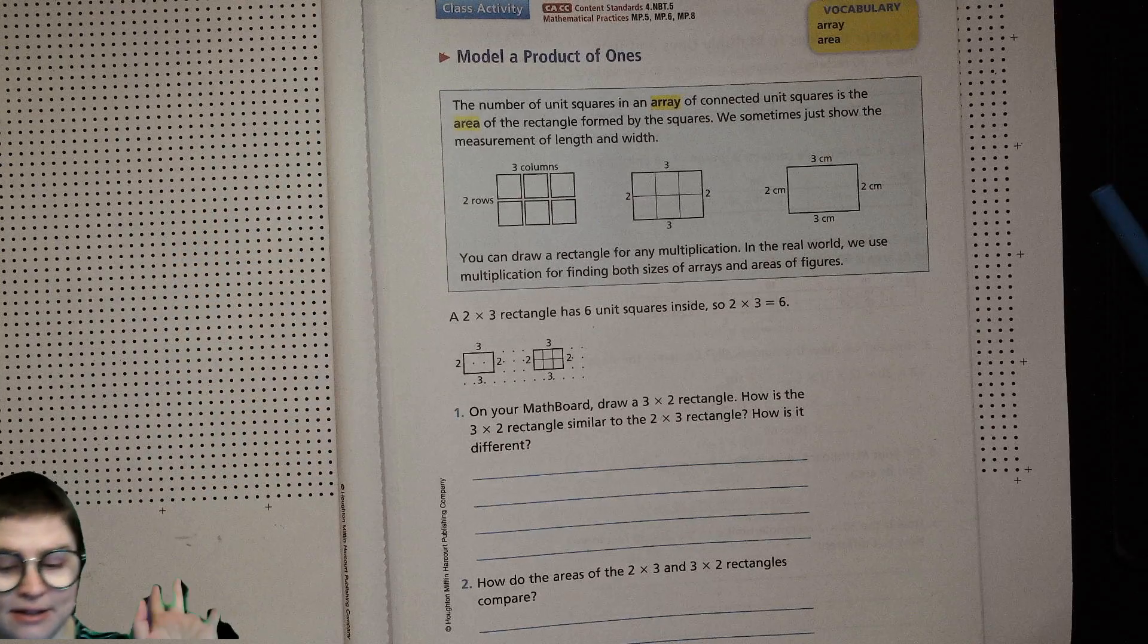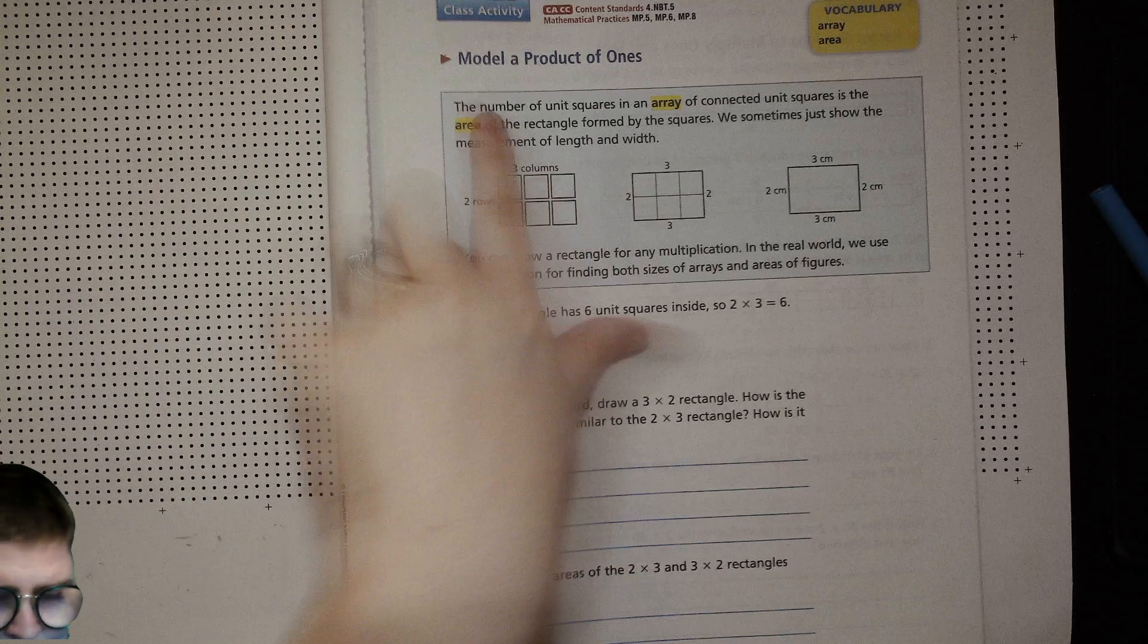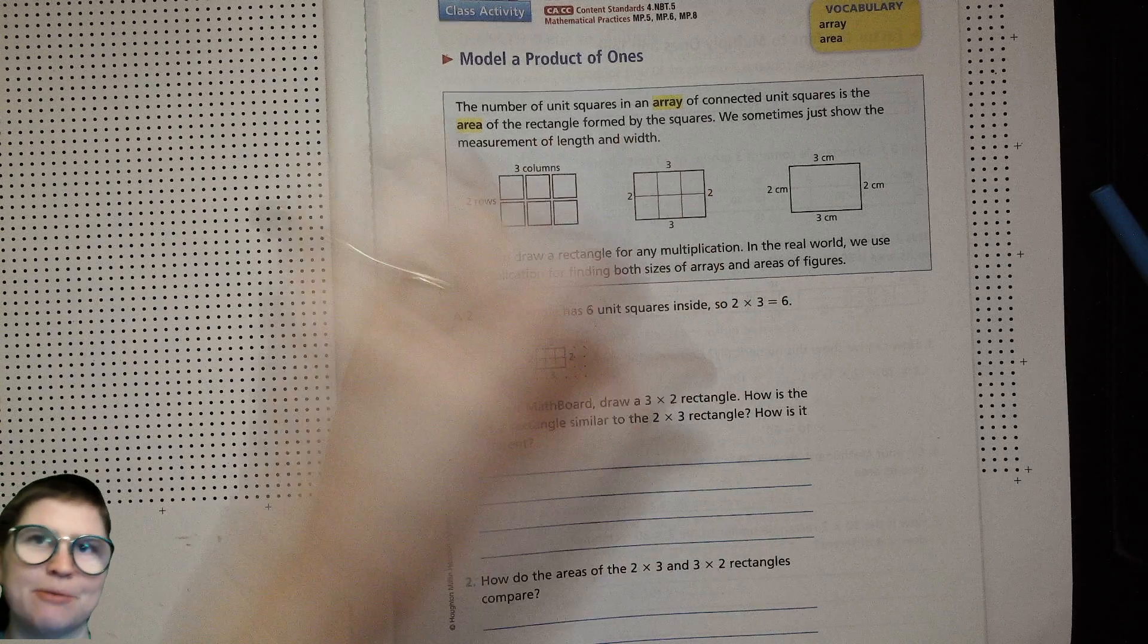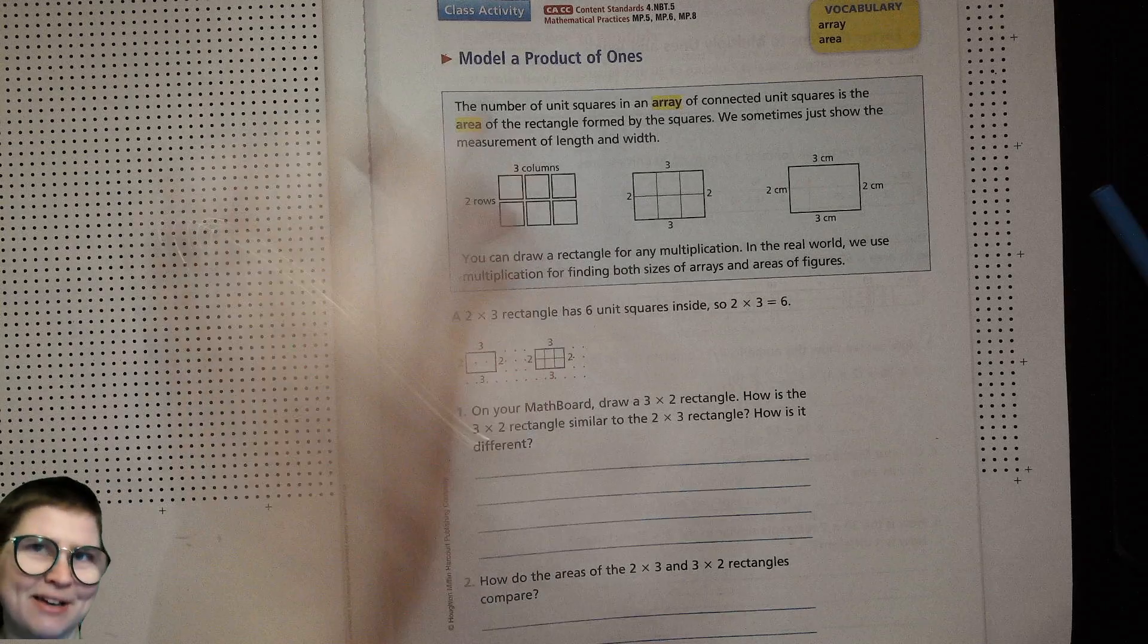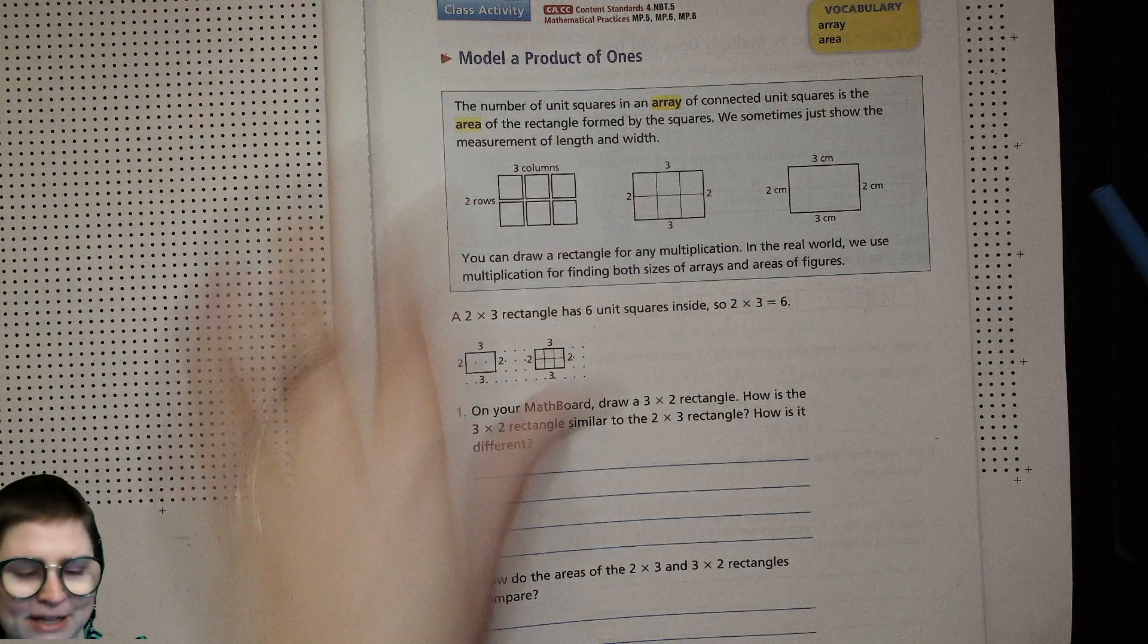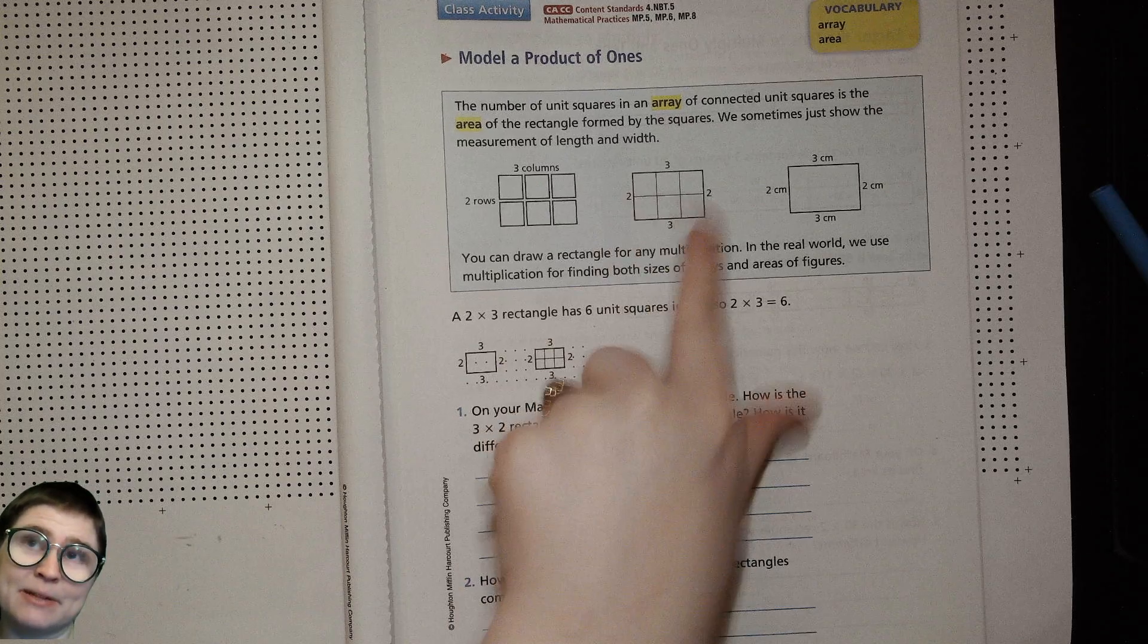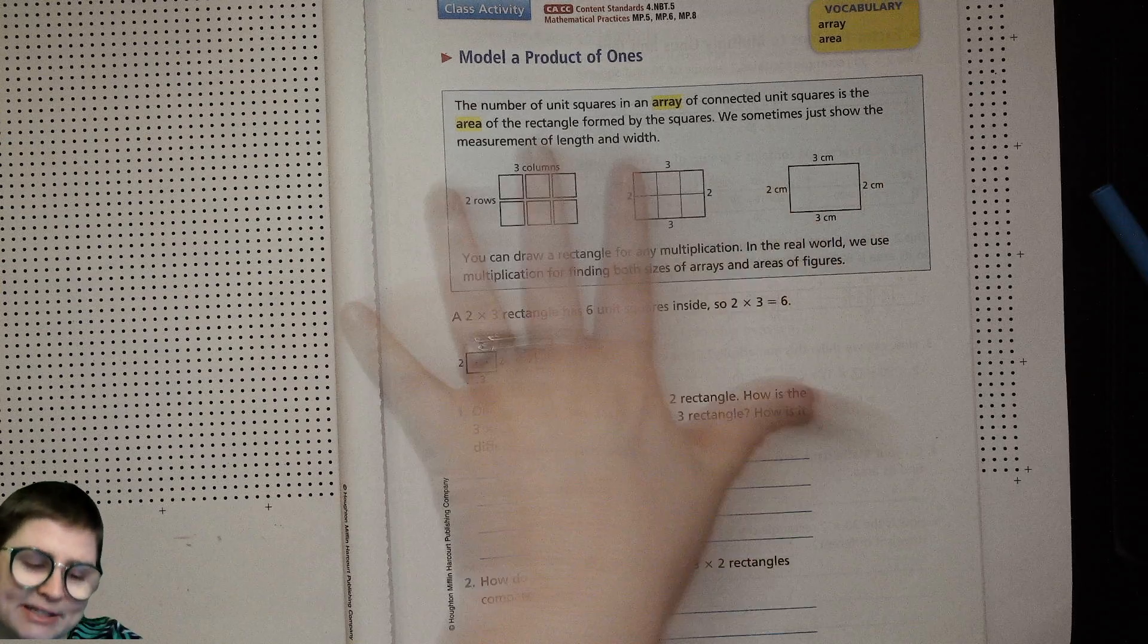Model a product of ones. The number of unit squares in an array of connected unit squares is the area of the rectangle formed by the squares. So you might remember having those pink, they're orange and purple and you make a row and then you make a couple rows and then you have columns, just like that.